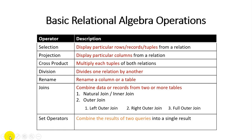The last operation is the set operator, which combines the result of two queries into a single result. When a user wants to perform a single query but the output depends on multiple queries, we use set operators. There are three different types: union, intersection, and minus (also called set difference). This is the basic summary of operations covered in previous and today's lecture.